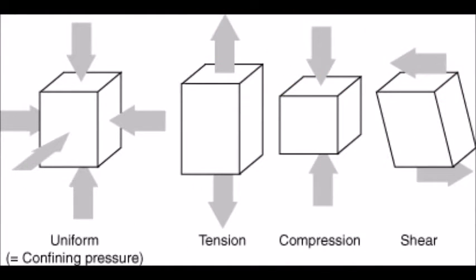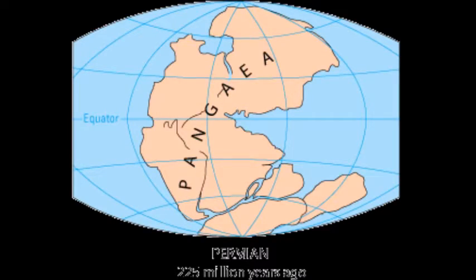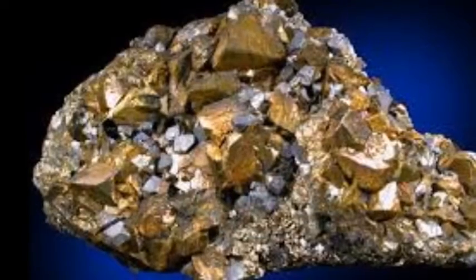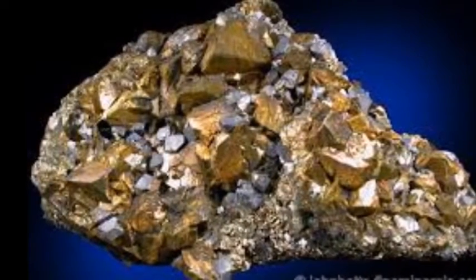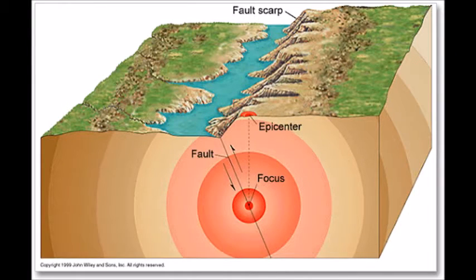Reverse faulting goes low to high; normal faulting goes high to low; and strike-slip faulting is sliding past one another. Brittle rocks are usually granite and quartzite; ductile rocks are salt, shale, and marble. More ductile behavior occurs at deeper, steeper depths; more brittle behavior at shallower depths. Stress is the force applied to a rock — it could be compression or tension. Strain is the plastic, ductile, or brittle response, resulting in changes to the shape and size of the rock's structure.